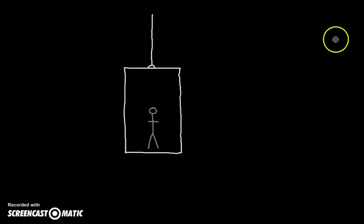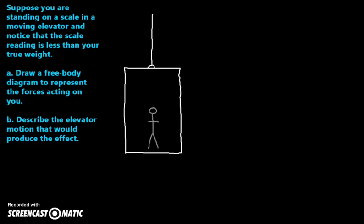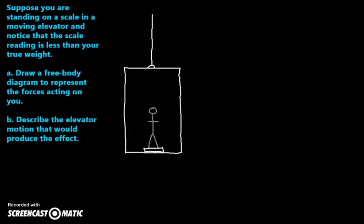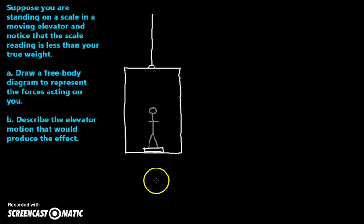Now let's try the second question, number 16. Suppose you're standing on a scale in a moving elevator and notice that the scale reading is less than your true weight. The key thing to understand is what a scale actually measures — it measures the normal force. You press on the scale, and an equal force pushes back — that's Newton's third law. So the normal force you experience is what's being measured. If you push down more, the scale reads more.